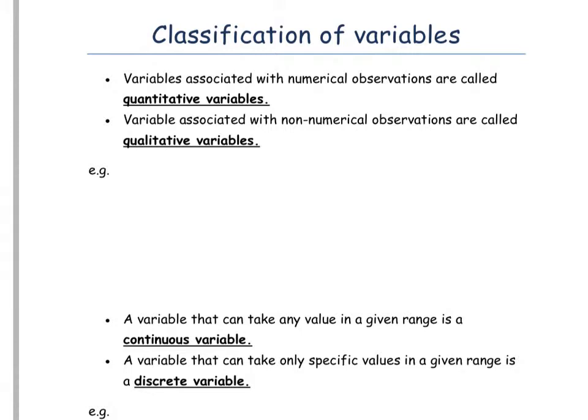A quantitative variable has numerical answers, so it could be looking at time, weight, or length. Whereas non-numerical observations — qualitative data — are going to be things like eye colour or what's your favourite colour.